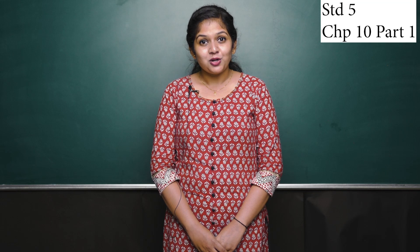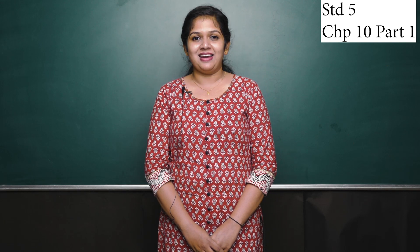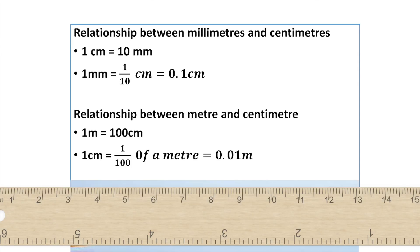Hello students, welcome to the maths class. Today we are going to learn 10s and 100s, converting fractions to decimals. 6 upon 100 in its decimal form is 0.06, 26 upon 100 in its decimal form is 0.26, 432 upon 100 in its decimal form is 4.32.